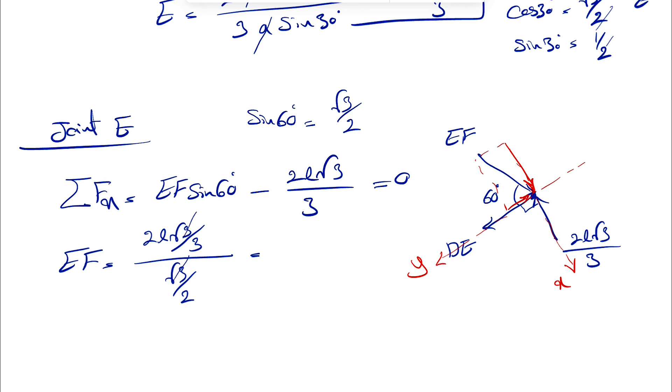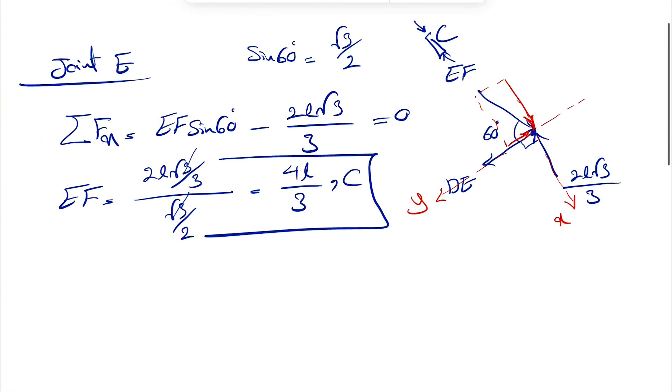So this is going to be, you can cancel out the square root of 3, 4L divided by 3. We did not get any negative sign that shows that was the correct direction for EF. So the member EF, which is here, is going to be in compression. So this will be compression. That would be our first member.